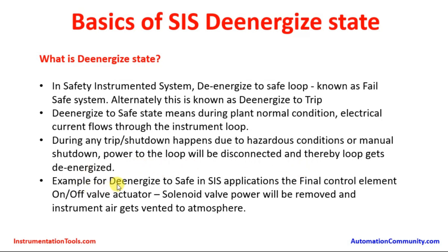An example of de-energized to safe state in safety instrumented system applications is the final control element on a fail actuator, wherein solenoid valve power is removed and instrument air gets vented to the atmosphere. This is a generic example; in safety instrumented system applications across industries, there are many on-off valves used across the plant for different applications.